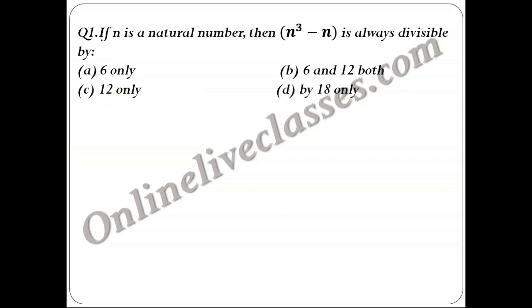If you read the first question, you can see that if n is a natural number, then n³ - n is always divisible by... The value of n is given as a natural number. Natural numbers are 1, 2, 3, 4, 5, 6 and so on. All the positive integers are natural numbers. Now we need to find what n³ - n will always be divisible by.